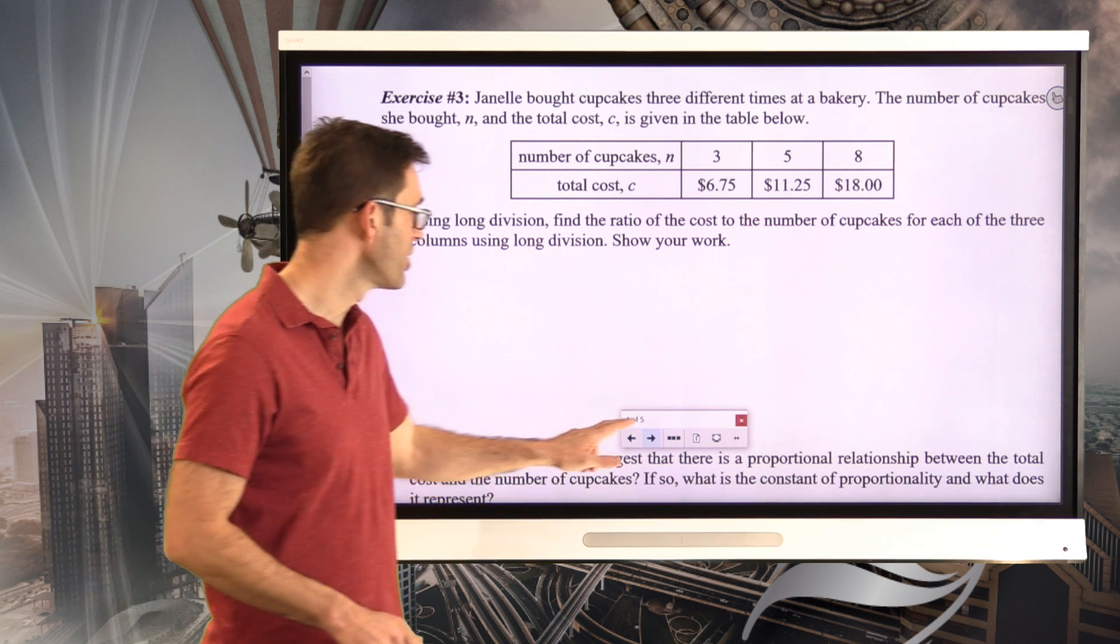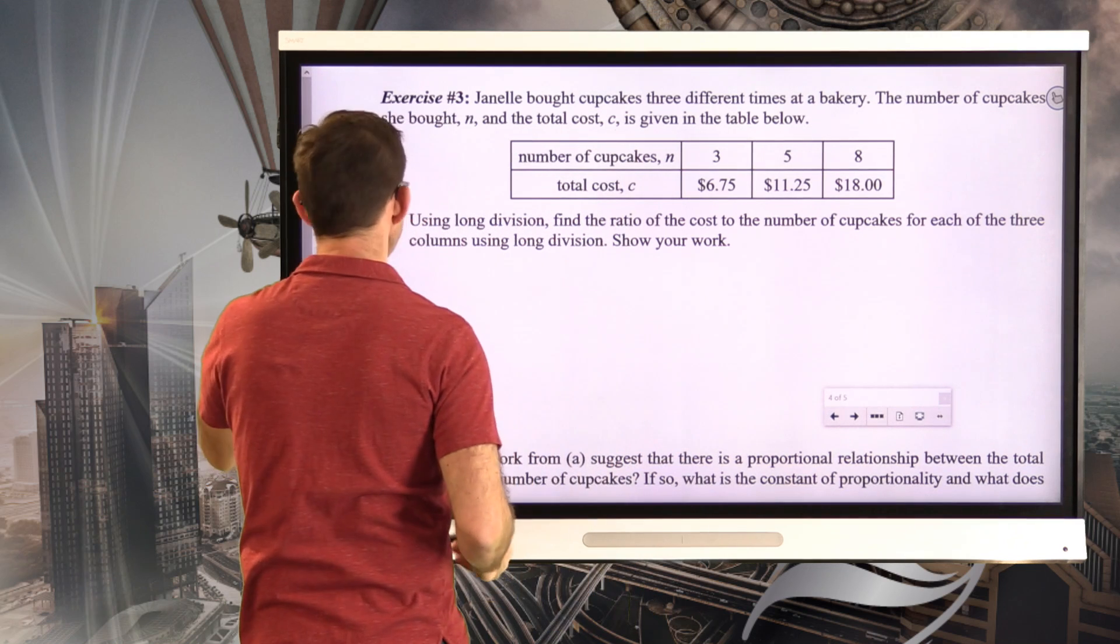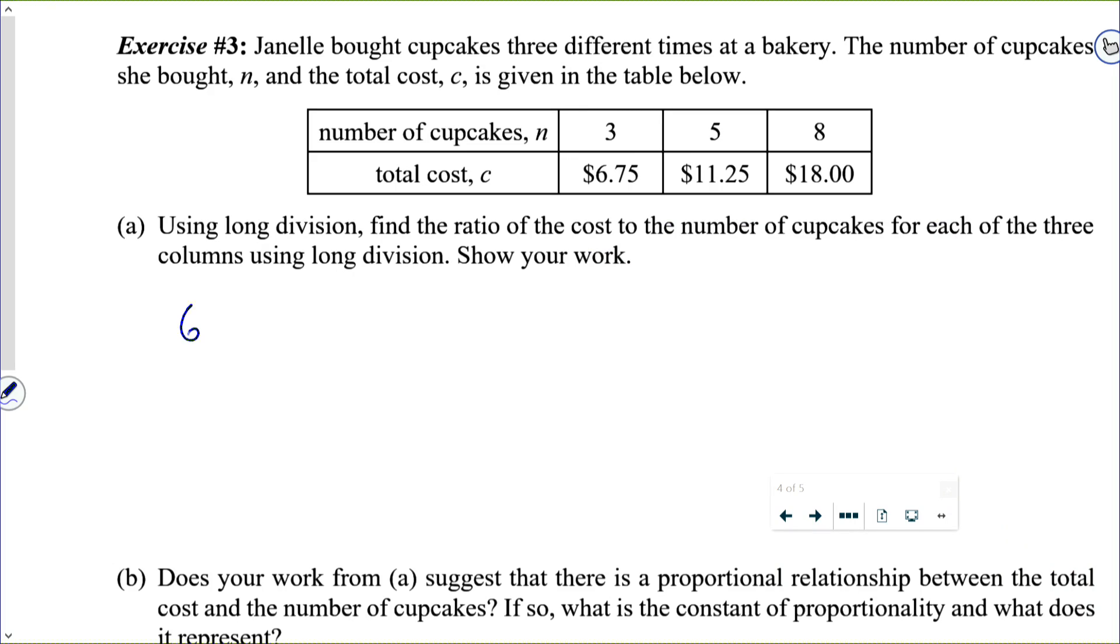All right. Let's do some decimal long division. No problem here. This is going to be pretty easy. In the first case, what I'm going to be doing is doing $6.75 divided by three cupcakes. And let's see, we'll get a two there, six, subtract, zero, seven, the decimal. I'm going to get three, six, one, five, and five. So, in the first case, I'm going to get 2.35.